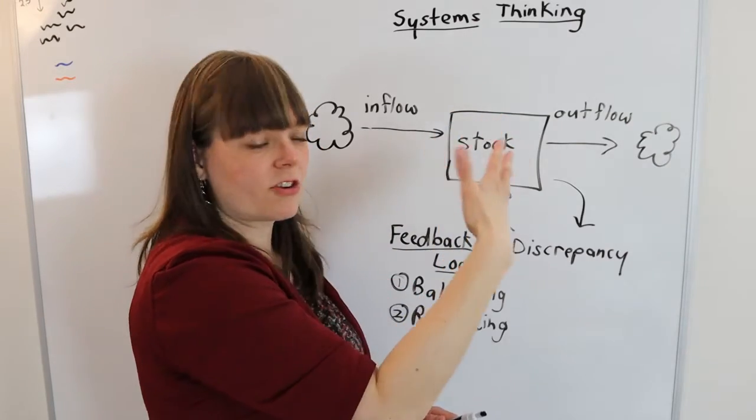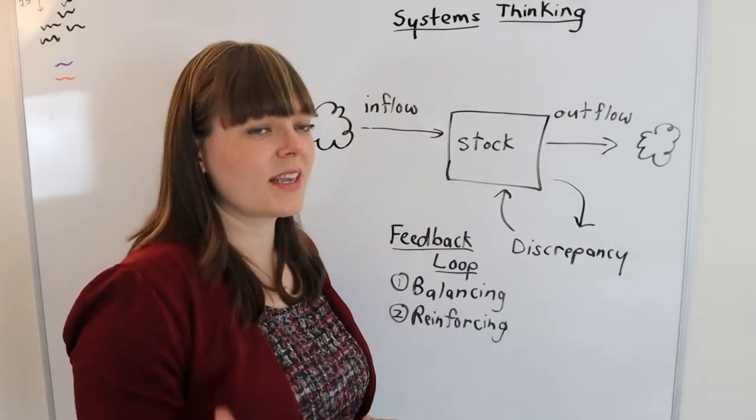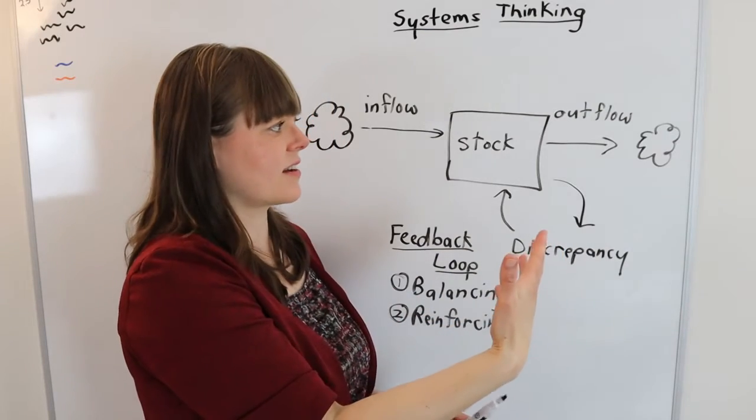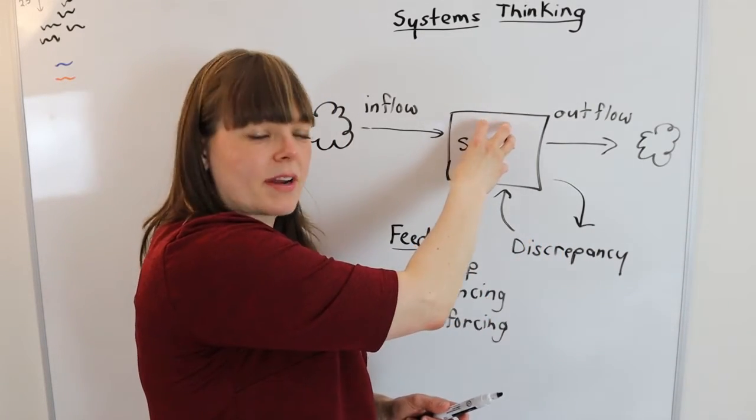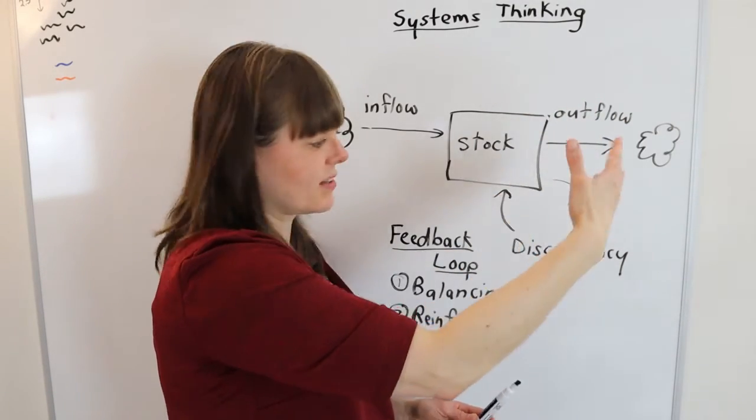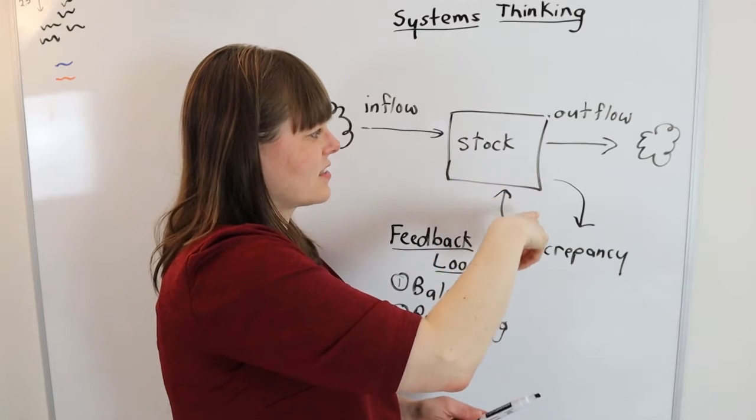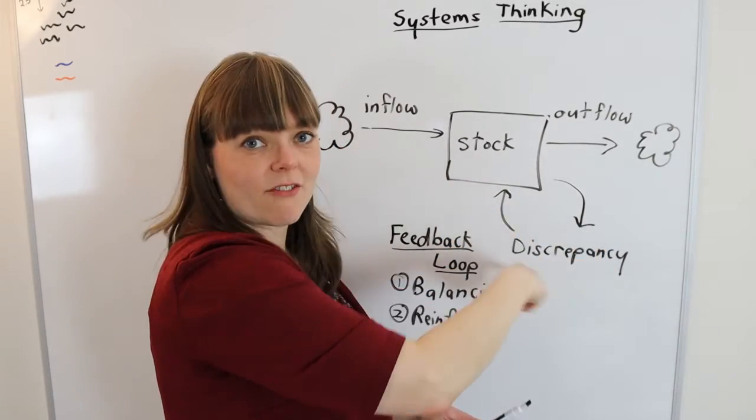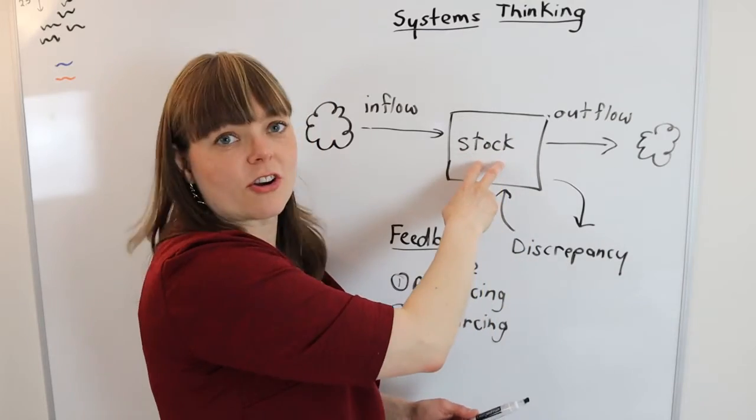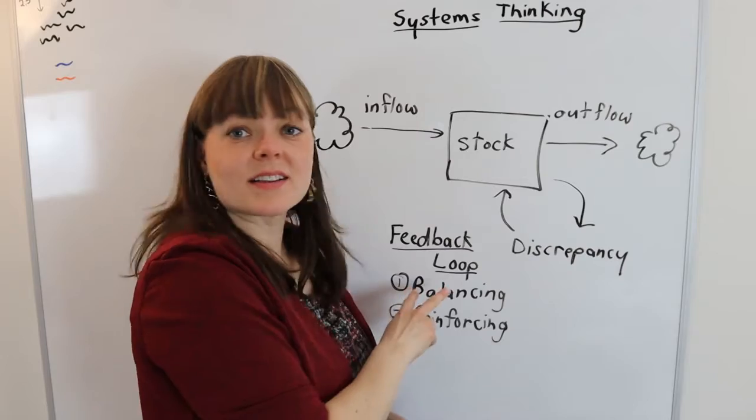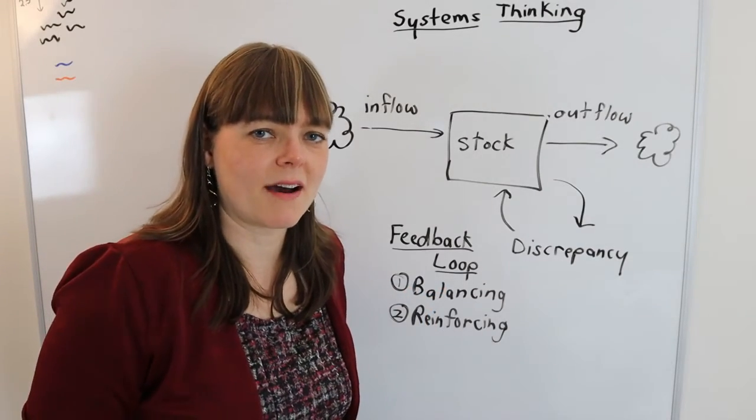that's a discrepancy between your goals and what's actually happening in your bank account, then that's going to lead you to change your outflow to spend less money. And that is in turn going to influence the stock. So that budgeting every month or checking your bank account every month is a little mini balancing feedback loop that people have.